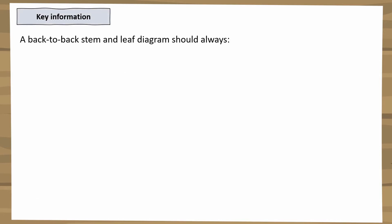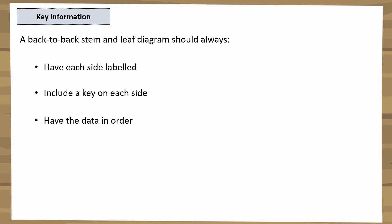So the key information for a back-to-back stem and leaf diagram: each side must be labeled, there should be a key on each side, and the data must be in order with the lowest leaves closest to the stem. The left-hand side just appears to be in reverse because the lowest leaves are nearest to the center.